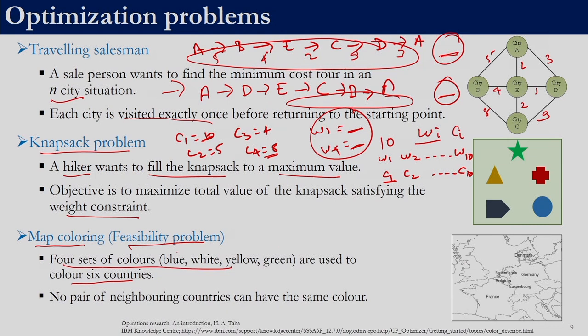Each of the 6 countries is to be colored by one of these 4 colors, and the constraint is that no pair of neighboring countries should have the same color. Here there is no objective to be minimized or maximized, but we have a set of constraints that have to be satisfied. For example, the color of Denmark and Germany cannot be the same. Similarly, Netherlands cannot have the same color as Belgium, Germany, or Denmark. This is a feasibility problem — we only need to find decision variables that satisfy the constraints.